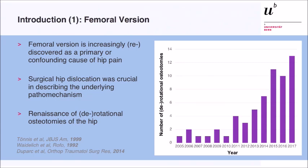What do we know about femoral torsion? We know that it is increasingly rediscovered as a primary and confounding cause of hip pain. Since we now have open surgery or arthroscopy available in those cases, it was crucial that we have described the underlying pathomechanism. This has led to a renaissance of derotational osteotomies of the hip in our institution, as you can see — there is an increase of those osteotomies.